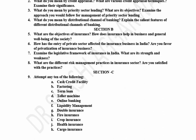Attempt any 10 of the following: Overdraft Facility, Factoring, Term Loan, Teller Machine, Online Banking, Liquidity Management, Double Insurance, Fire Insurance, Crop Insurance, Health Insurance, and Cargo Insurance.